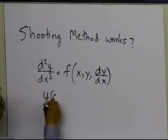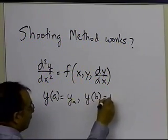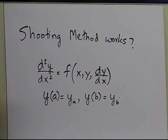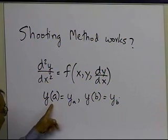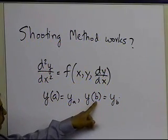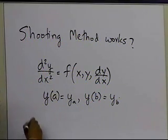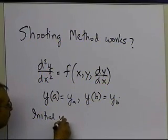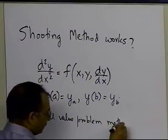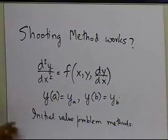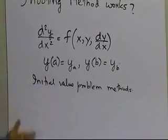Here you are given the condition y(a) = y_a, and at b it is y(b) = y_b. So you are given two boundary conditions — what's happening to y at x equal to a, and what's happening to y at x equal to b. Now what the shooting method does is it basically uses initial value problem methods.